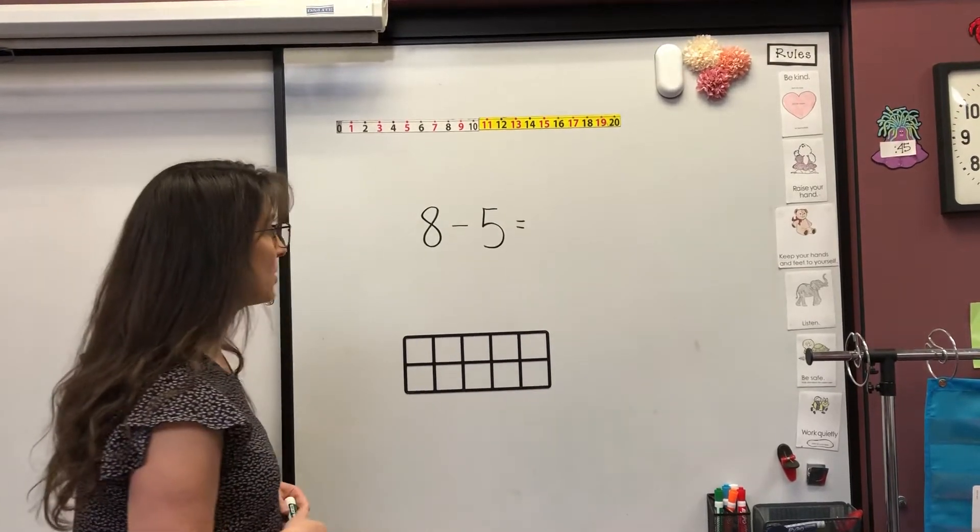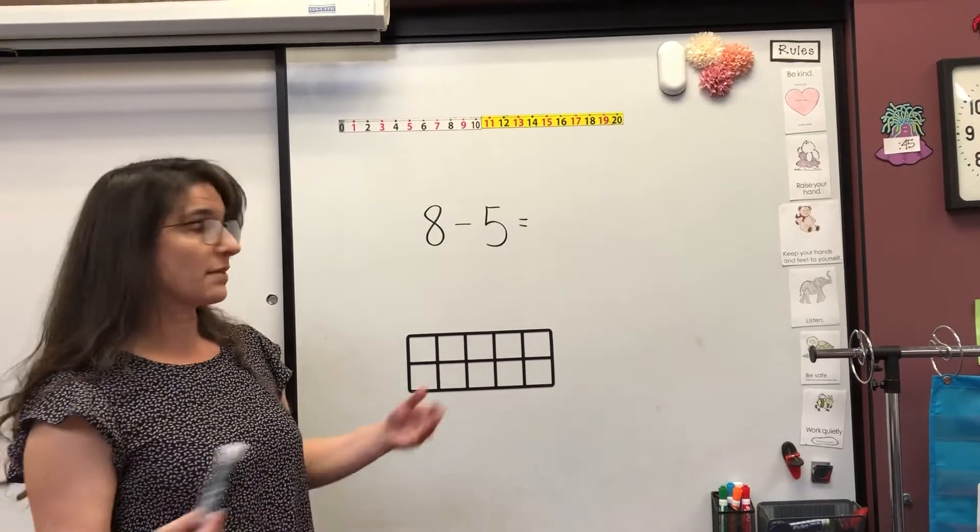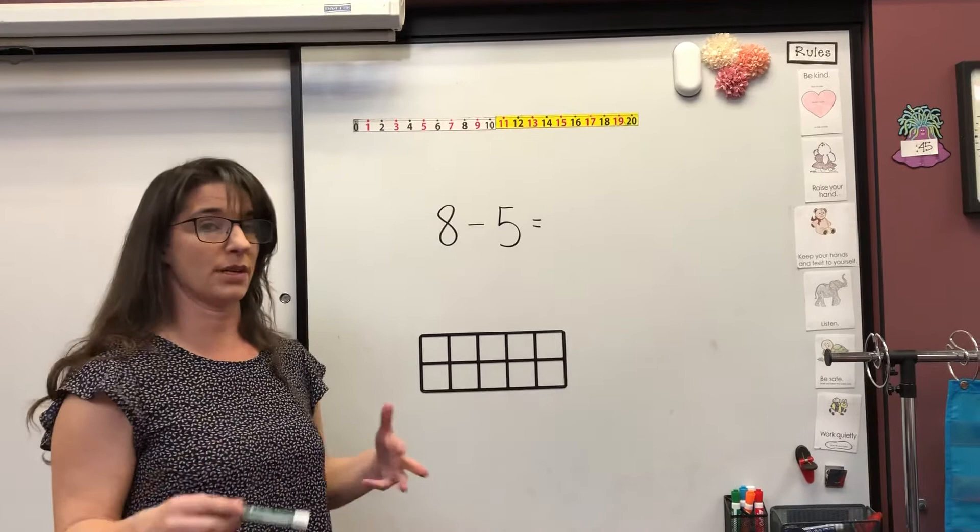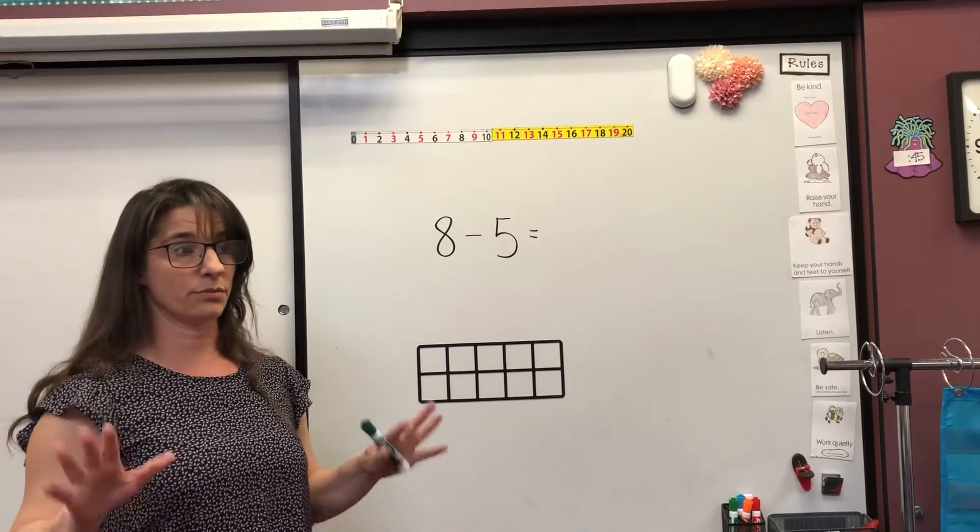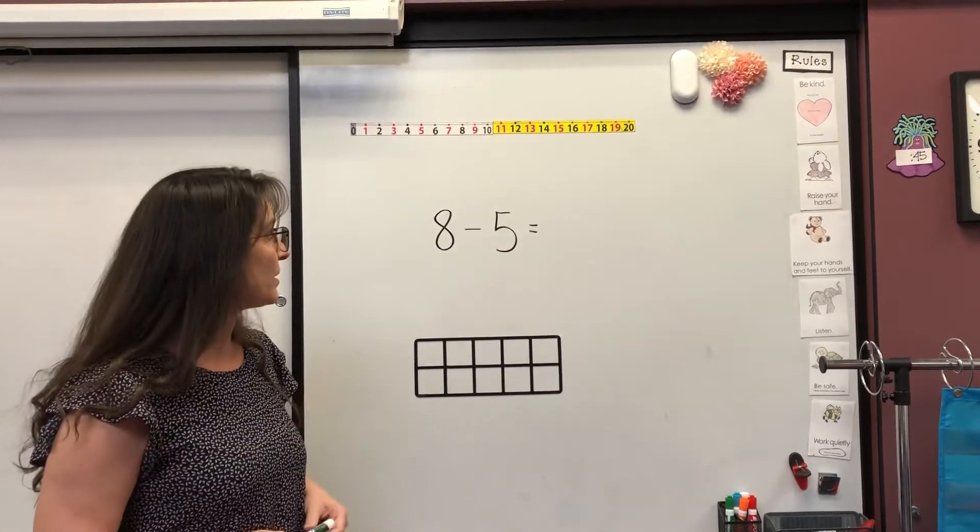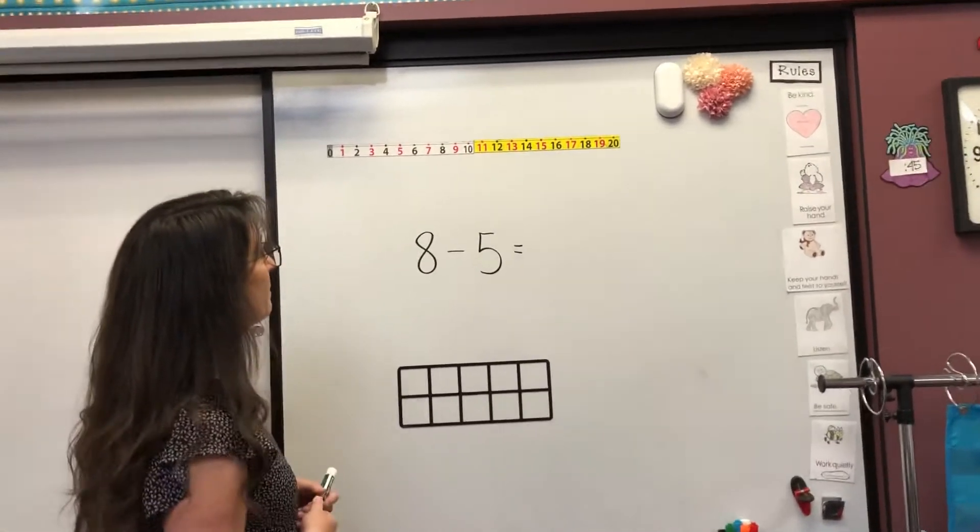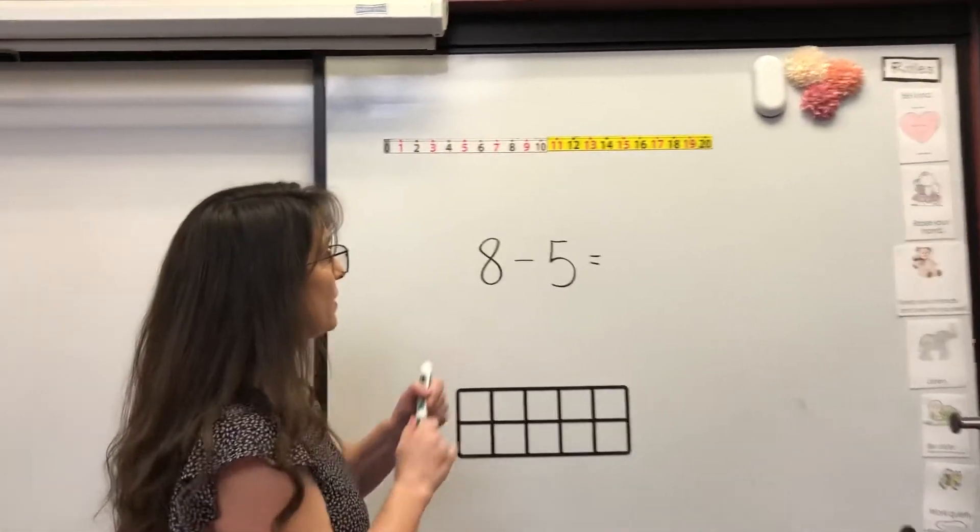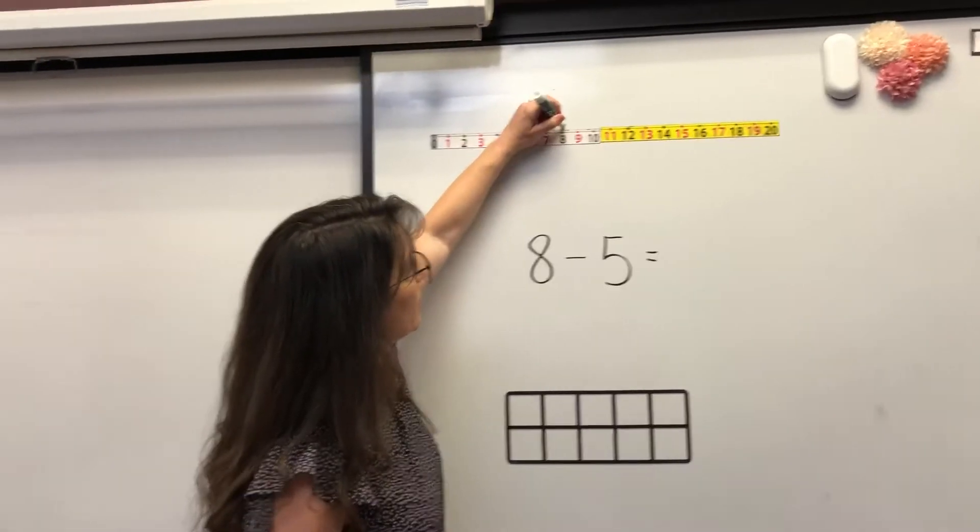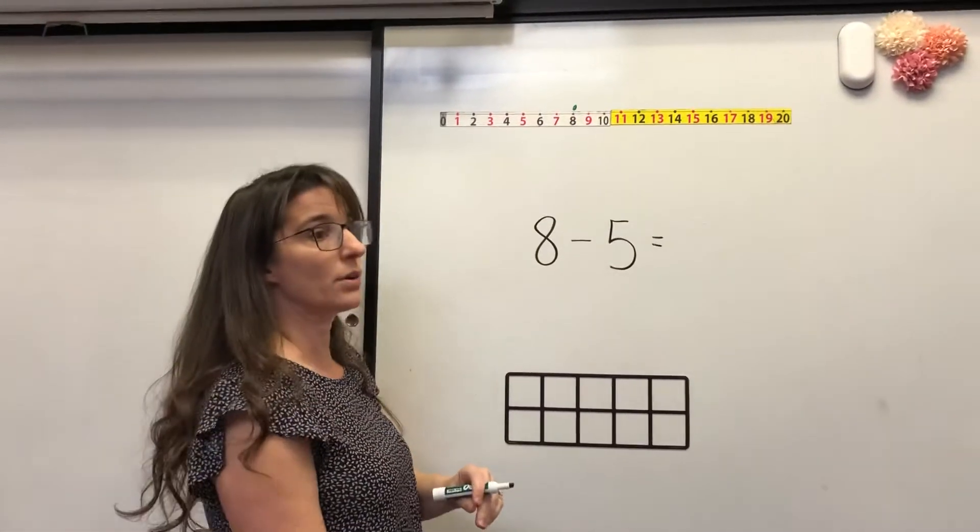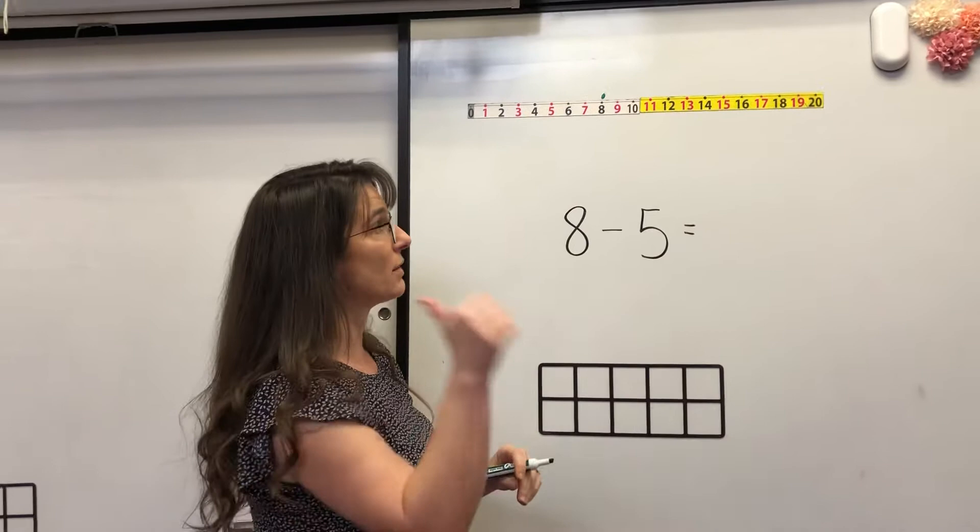Welcome back. So something that you could have done - let's start with something different today because we've been starting with your fingers. So this time maybe we'll start with the number line. If you start at 8 on the number line and you count backwards, backwards because we're subtracting, 5 times.